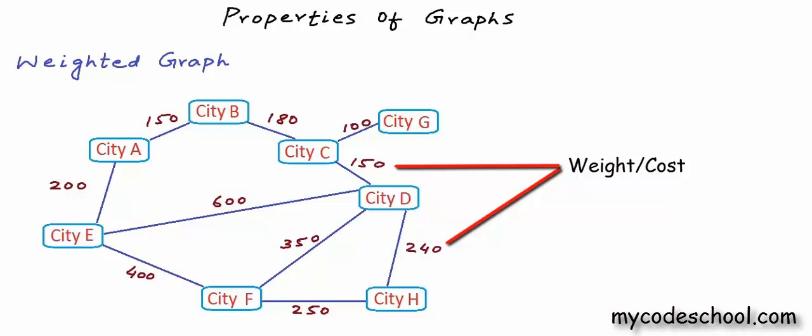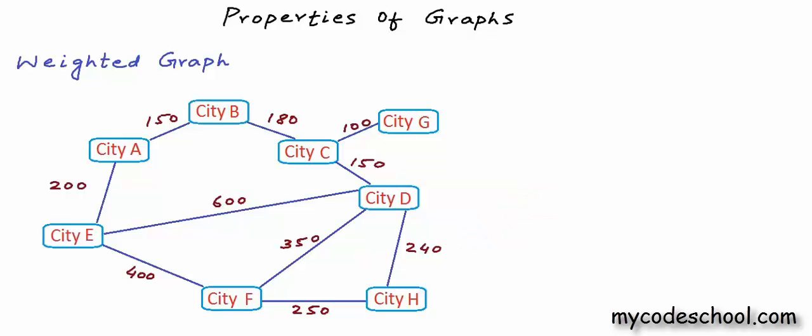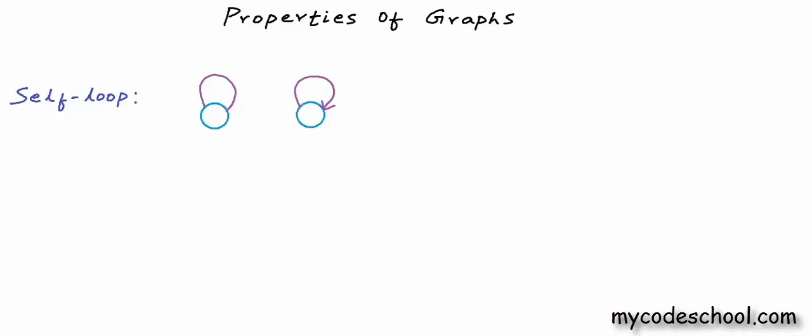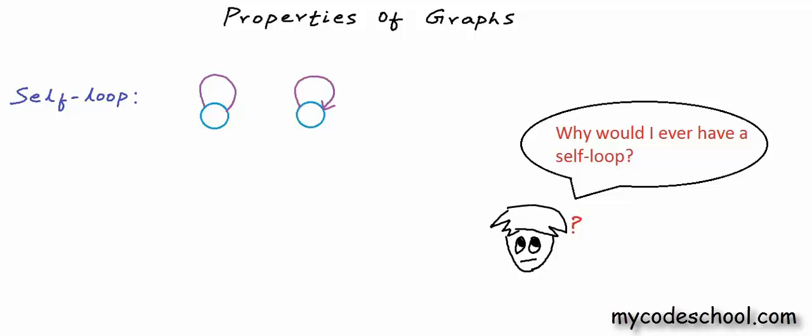Now we can also have some special kinds of edges in a graph. These edges complicate algorithms and make working with graphs difficult. An edge is called a self-loop or self-edge if it involves only one vertex — if both endpoints of an edge are the same, then it's called a self-loop. We can have a self-loop in both directed and undirected graphs. Sometimes if edges are depicting some relationship or connection that's possible with the same node as origin as well as destination, then we can have a self-loop.